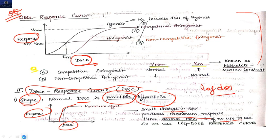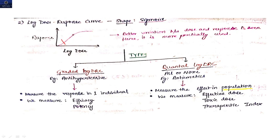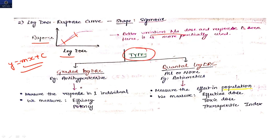On the log dose versus response curve, a straight line portion appears, allowing you to apply y = mx + c to easily derive the dose-response relationship. This also shows better variation. There are two types of log dose-response curves: the graded log DRC and the quantal log DRC.